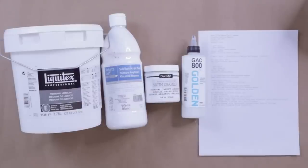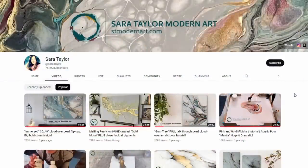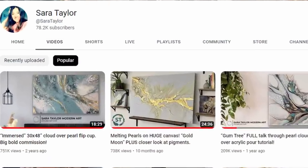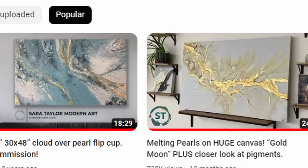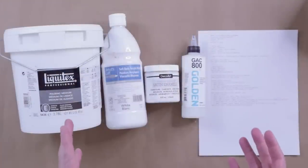All right Pouring Nation, today I want to try a pour just like Sarah Taylor. She creates very earthy, beautiful paintings with pearl cells all over the place coming up through her paint. Usually there's a stark contrast between the colors and the background. I really want to create something like that.